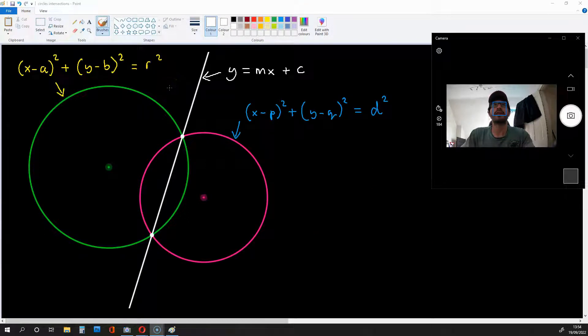Okay, so let's start by defining the equations of the two circles and also the line that cuts through their intersections. The equation of the first circle is this and the equation of the second circle is this. They have different centers and different radiuses and the line cutting through their intersections is of the form y equals mx plus c.